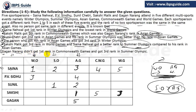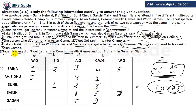Gagan Narang did not get first rank in Commonwealth. So in that column, Gagan will not have rank 1. Also, rank 1 can't go in another row because it's already present in that row. So rank 1 can only go to one specific position there — that must be it. We have remaining 2 and 3 in the column, but 2 is already in that row, so 2 must go in the other cell and 3 must go in the remaining one. Then Gagan Narang got third rank in Summer Olympics.